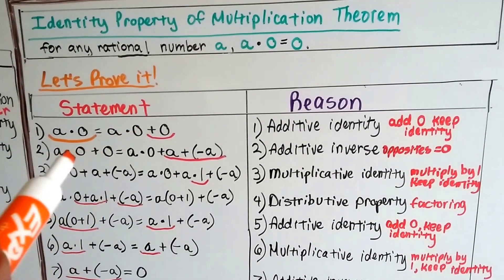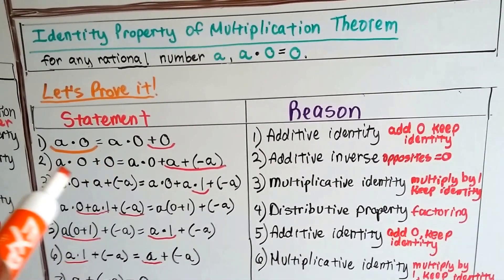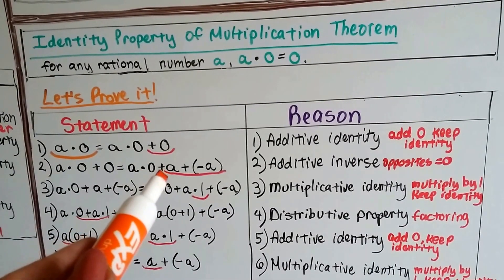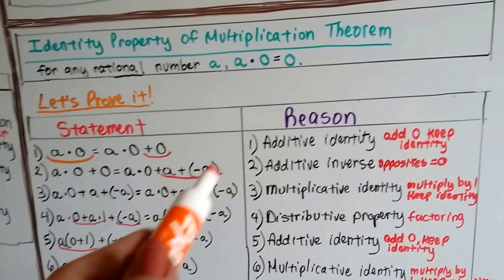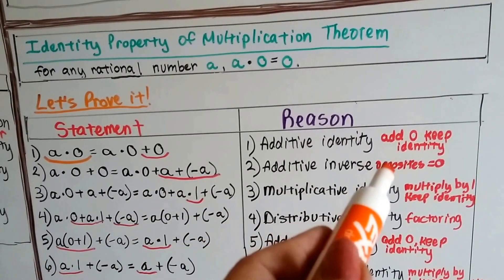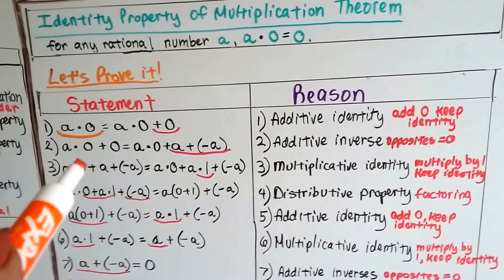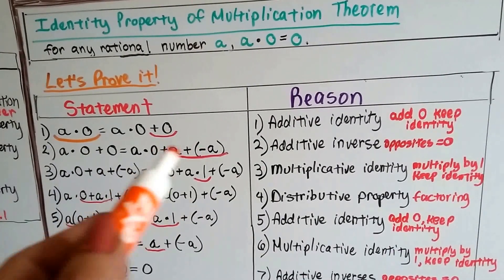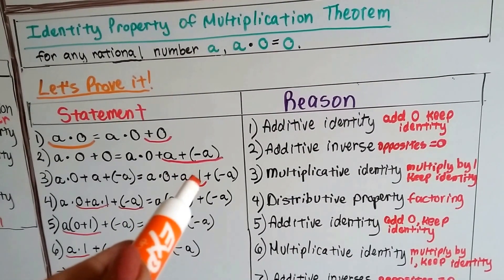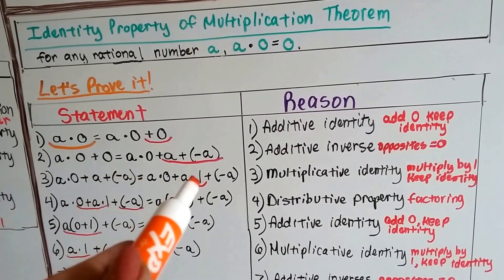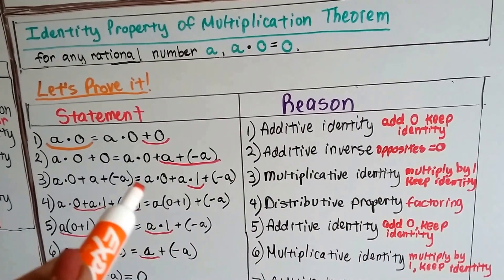Next, a × 0 + 0 equals a × 0 + a + (−a), where the underlined part a + (−a) is the additive inverse — opposites equal zero. Then we substitute: a × 0 + a becomes a × 0 + a × 1, using the multiplicative identity — multiplying by one lets a number keep its identity.